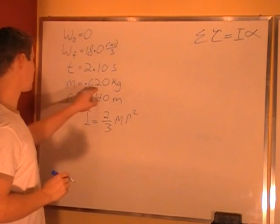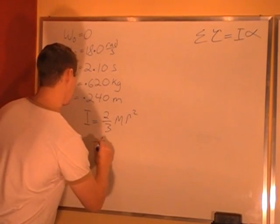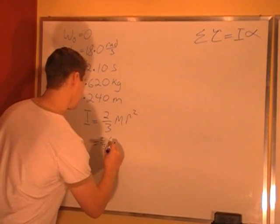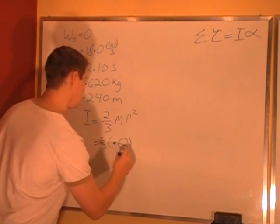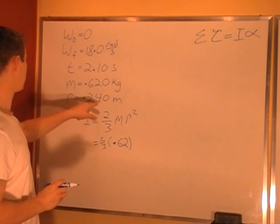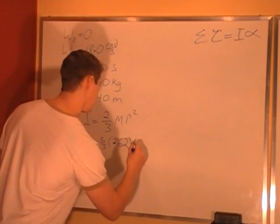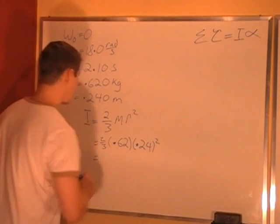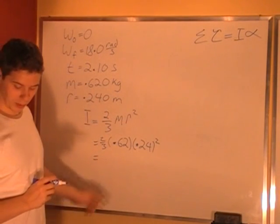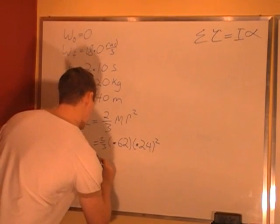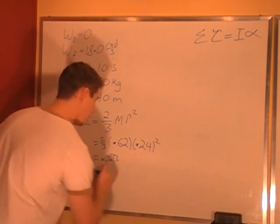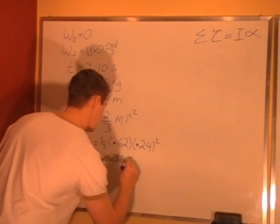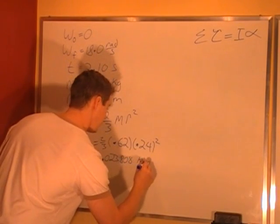The mass we use is the mass of the basketball, 2/3 times the mass of the basketball is 0.62 times the radius which is 0.24 squared. So the moment of inertia, if we plug that in, turns out to be 0.023808 kg·m².